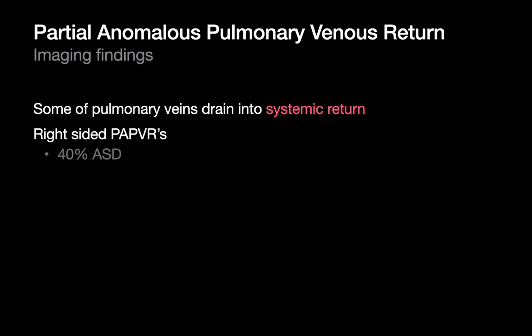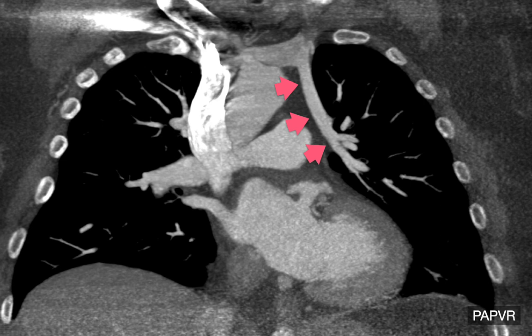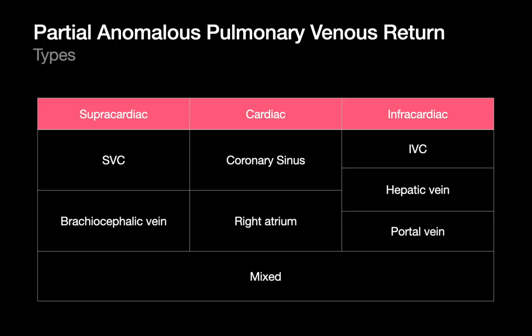PAPVR is the final central venous condition. In PAPVR, some of the pulmonary veins return to the heart via the systemic central veins and right atrium instead of the central pulmonary veins and left atrium. On this coronal MPR, you can see a conspicuous pulmonary vein draining the upper left lung into the left brachiocephalic vein instead of the left atrium. There are many different types of PAPVR, classified according to where they drain to — the SVC or central veins in the chest, the IVC or central veins in the abdomen, or directly to the right side of the heart. PAPVRs could occasionally exhibit mixed drainage.